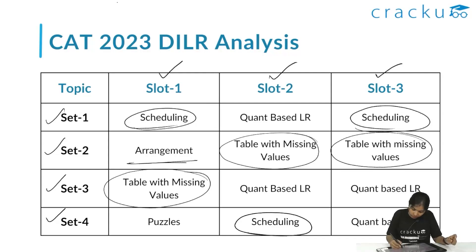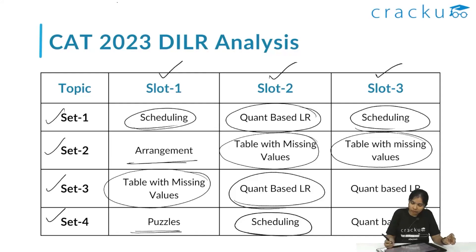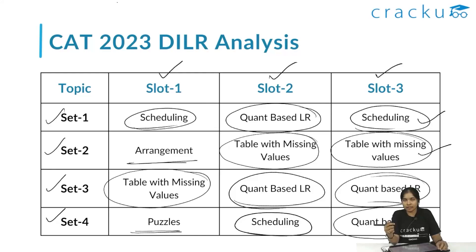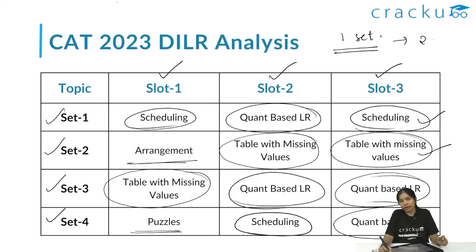Slot 2 covered two quant-based LR questions, tables with missing values, and scheduling. Slot 3 covered scheduling, tables with missing values, a quant-based LR set, and quant-based DI. If you are good at LR, try to select an easy LR set. Many candidates try to solve at least one set to meet the cutoff, but to maximize your score, try to solve at least 2 to 2.5 sets.